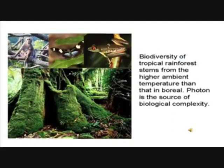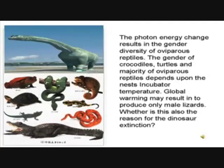Biodiversity of tropical rainforest stems from the higher ambient temperature than that in boreal regions. Photon is the source of biological complexity. The photon energy change results in the gender diversity of oviparous reptiles. The gender of crocodiles, turtles and the majority of oviparous reptiles depends upon the nest's incubator temperature. Global warming may result in producing only male lizards. Could this also be the reason for the dinosaur extinction?